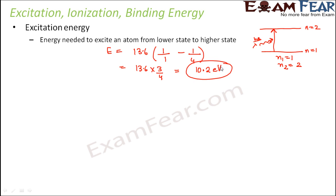The values of excitation energies are different for different energy levels. If the hydrogen atom wants to get excited from n equal to 1 to n equal to 4, more energy is needed — just as climbing to a higher floor requires more energy than a lower one. You can easily calculate excitation energies for different energy levels using the same formula.